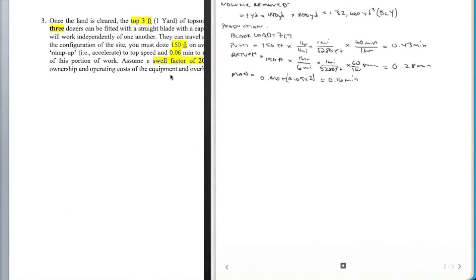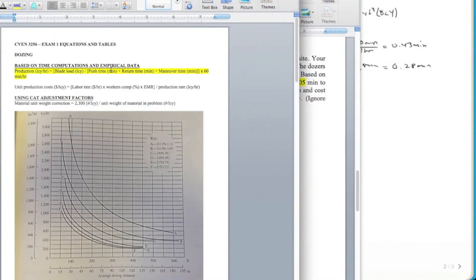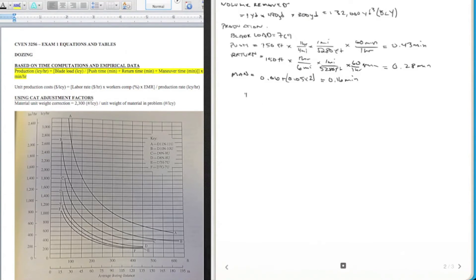Now we have all of the variables we need for our production equation. We're going to plug them all in. Production equals our blade load, 7 loose cubic yards, divided by all of these factors. Push time 0.43 plus 0.28, that's our return time, and our maneuver time 0.16. We're going to take all of that times 60, and that's to convert it into hours to make it a little easier. Plug all that in, you get 483, and that's loose cubic yards per hour. There's our production.